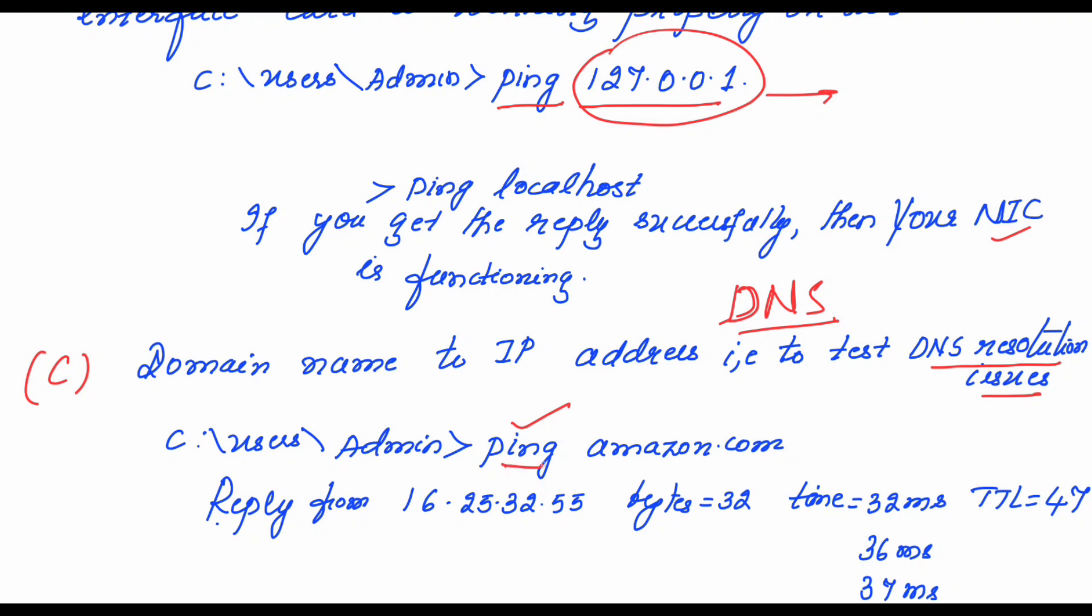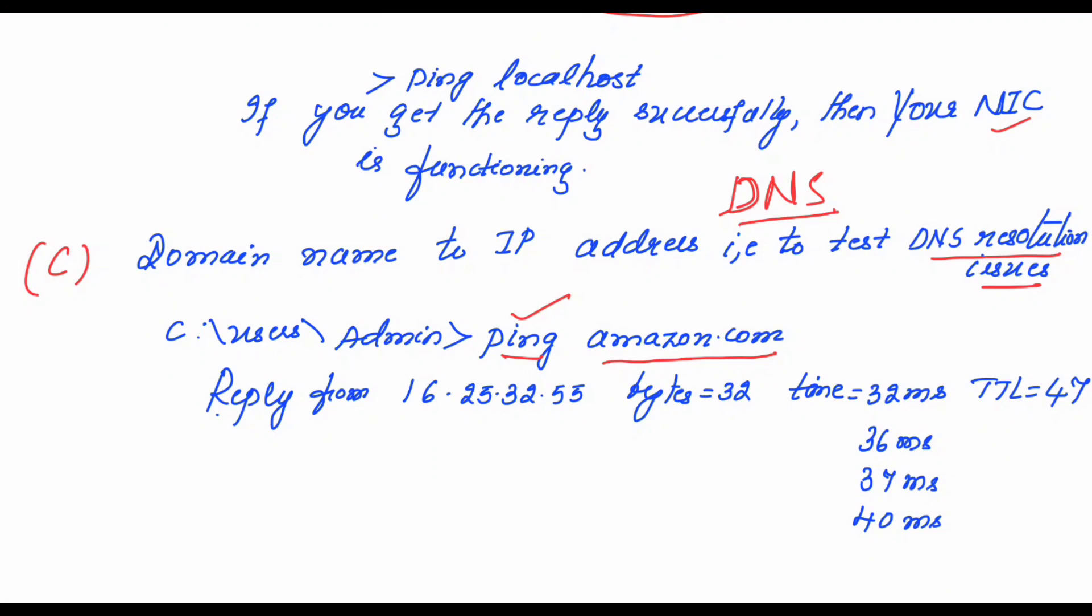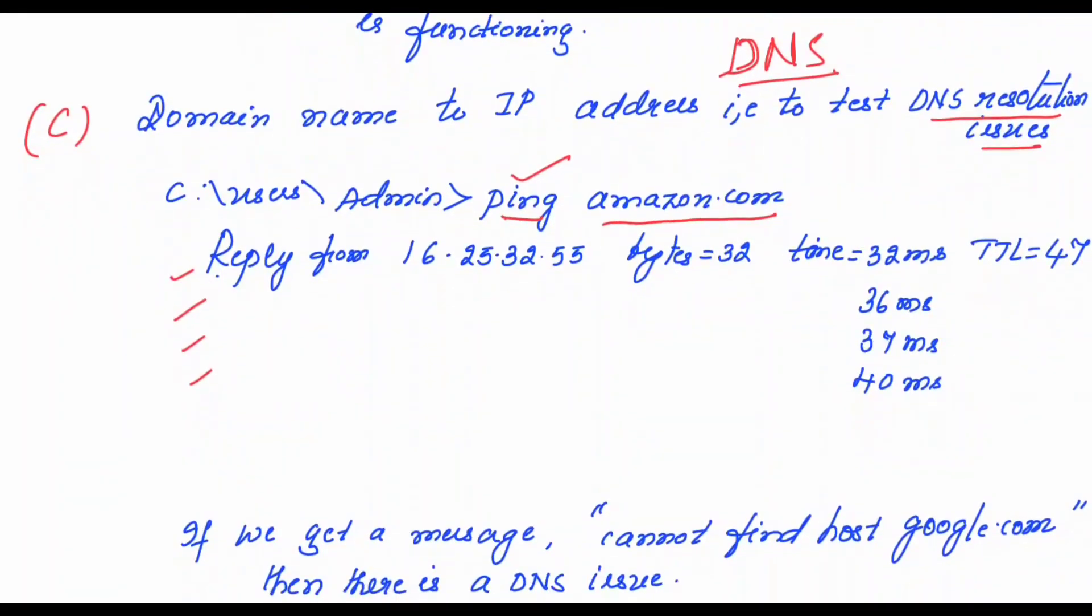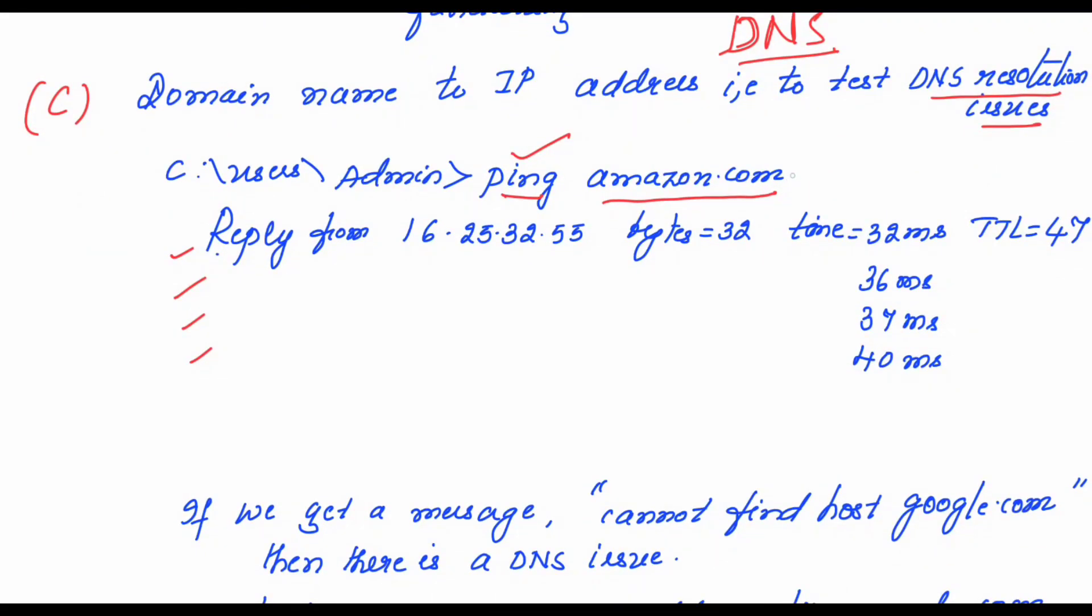DNS resolution issues can also be tested using the ping command. Just type the command ping followed by the host name or the server name. In this case, we are typing amazon.com. If you get a reply, that means four times the four packets are received, then definitely it is trying to perfectly map this server name, the host name or the domain name. This mapping of domain name with the IP address is done successfully and you are able to get the output.